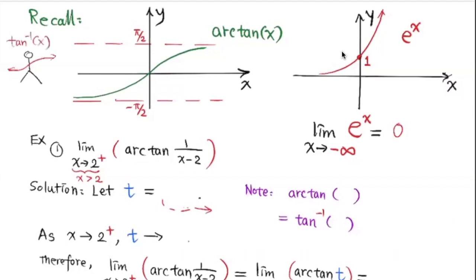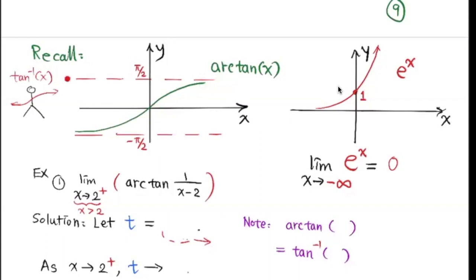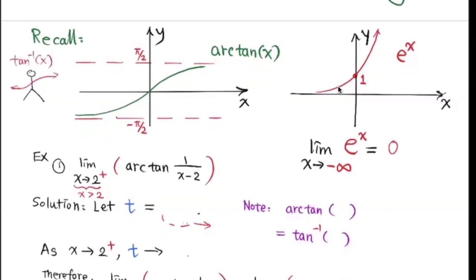Now we're going to talk about limits of composite functions. The graph for inverse tangent (arctan) looks like a Tai Chi move — it has two horizontal asymptotes. For e to the x, remember the exponential fish graph: when the base is greater than one, it's exponentially increasing; when the base is between zero and one, it decreases.